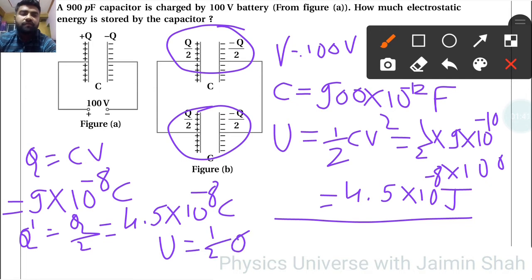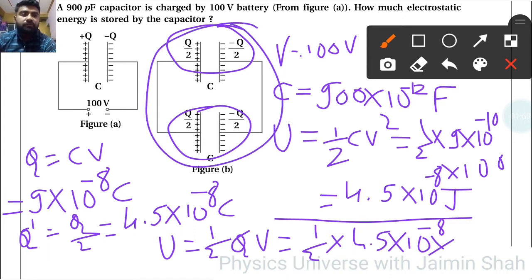Half into Q, 4.5 into 10 raise to minus 8. But see, V is not here, so I have to use the formula...